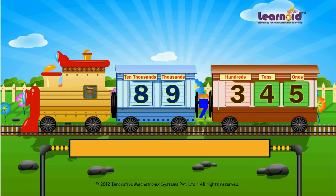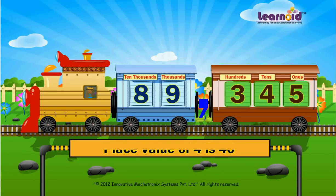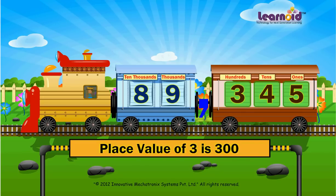Number 4 is in the 10's window. Its place value is 4. Number 4 is in the 100's window. Its place value is 300.